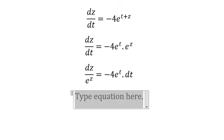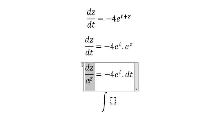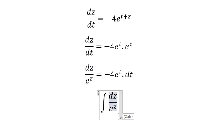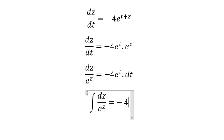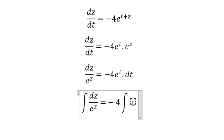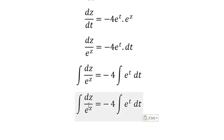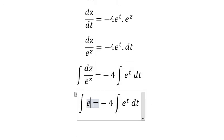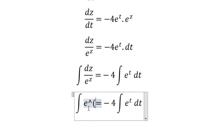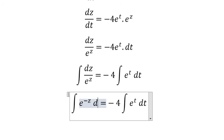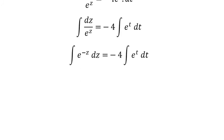Next, we integrate both sides. On this side, you get e to the power of negative z. So after integrating, we get negative e to the power of negative z.